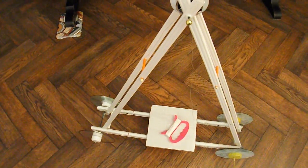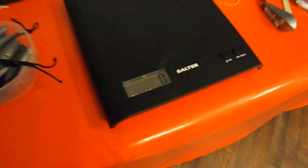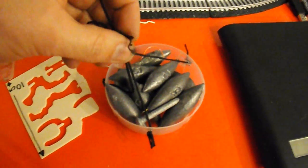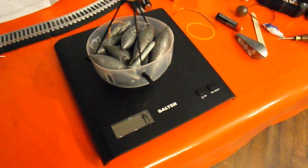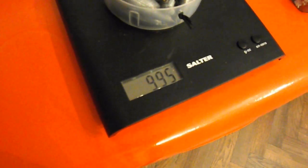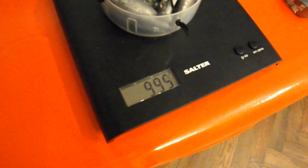What we now need to do is get one kilogram of weight. So I've got my scales here. I've got some lead fishing weights in a little plastic container. We're 995 grams, 994 grams. That's close enough for me.